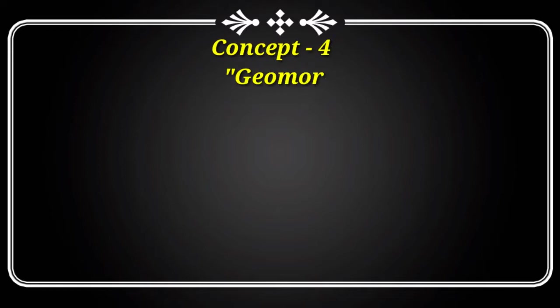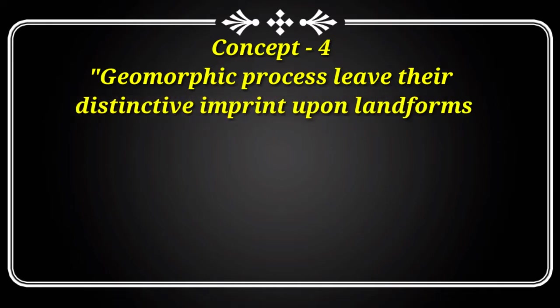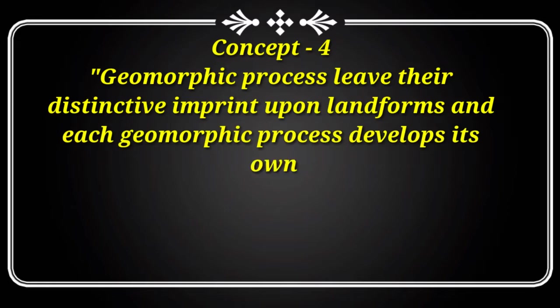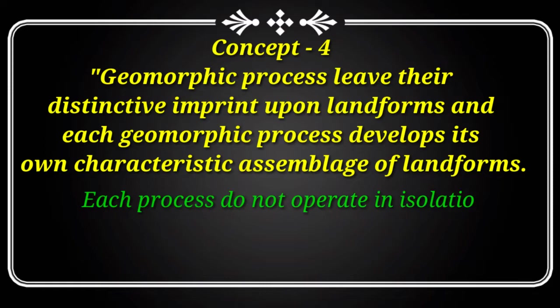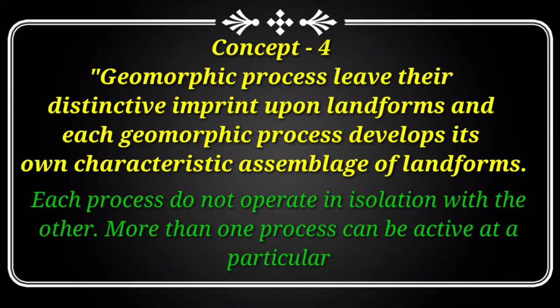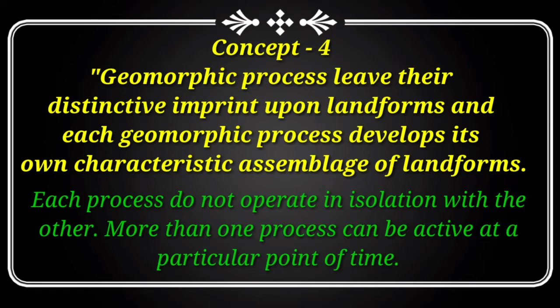The fourth concept states that geomorphic processes leave their distinctive imprints upon landforms, and each geomorphic process develops its own characteristic assemblage of landforms. The physical and chemical processes — grouped into endogenetic and exogenetic processes — are basically included in geomorphic processes. The endogenetic processes operate inside the crust, and exogenetic processes operate at the surface of the earth. Each process does not operate in isolation; more than one process can be active at a particular point of time. Different geomorphic processes active in a complex manner at a particular point of time are collectively known as a morphogenetic system.